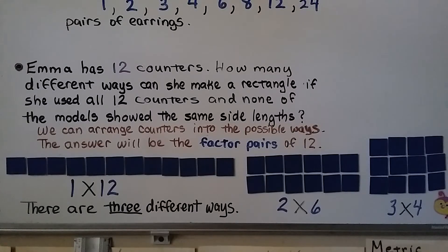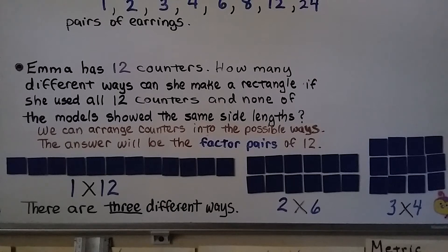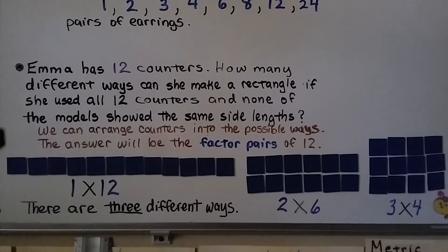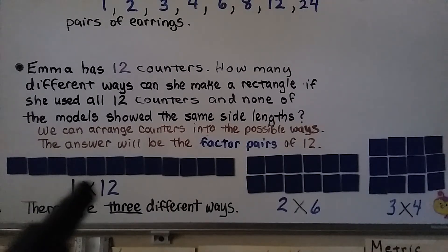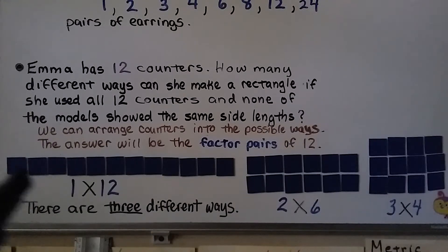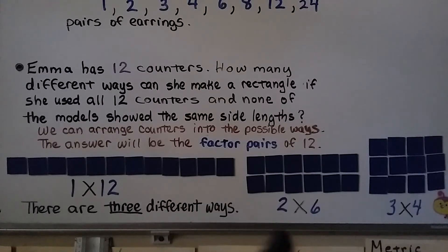Emma has 12 counters. How many different ways can she make a rectangle using all 12 counters, where none of the models show the same side lengths? We arrange counters into possible rectangles — the answer will be the factor pairs of 12. We can make one row of 12 for 1 times 12; two rows of 6 for 2 times 6; and three rows of 4 for 3 times 4. There are three different ways — three different factor pairs for 12.